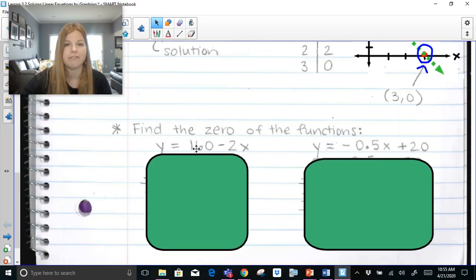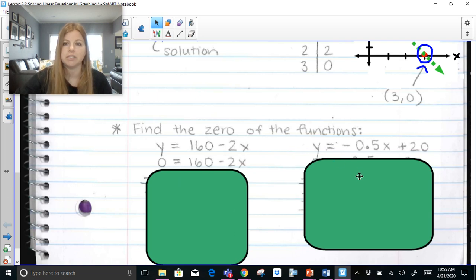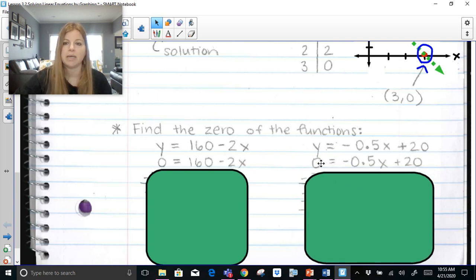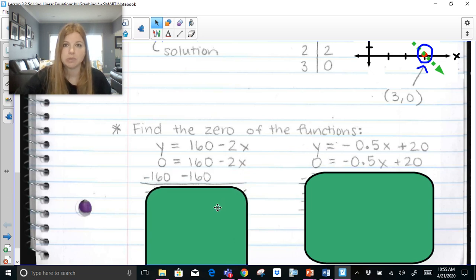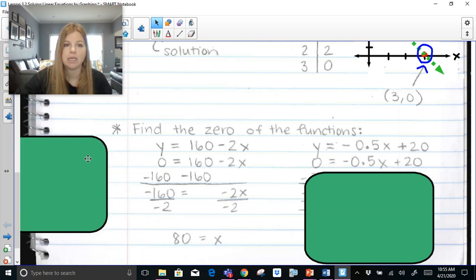So if I then said to you, take these two equations and find the zero, what we really need to know is finding the zero simply means to calculate x. And the way you calculate your x-intercept is you substitute y with 0. So finding the zero of a function simply means set y = 0 to solve for x. And then once you set y = 0 to solve for x, it's just business as usual with your regular solving equation skills. So you would subtract 160 on both sides, divide both sides by -2, and you would get 80.